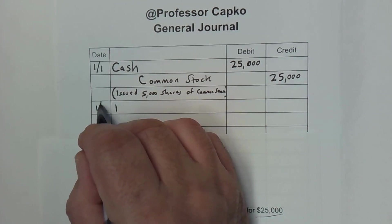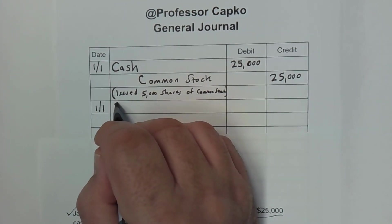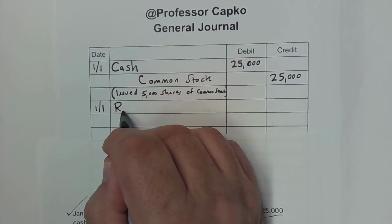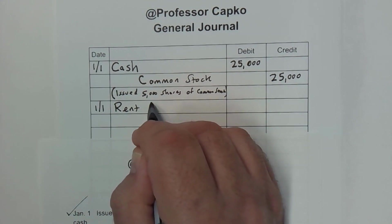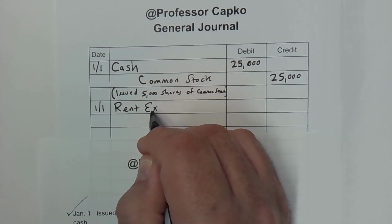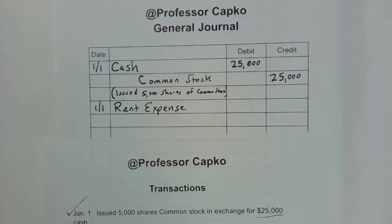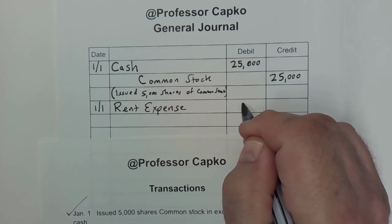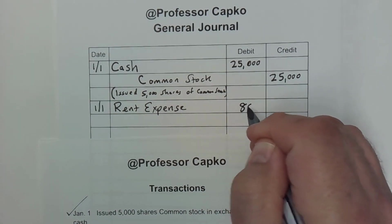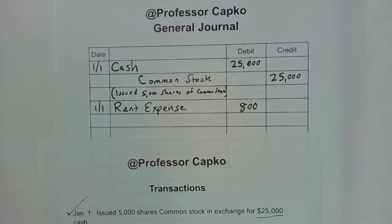So I'm going to put the date here — 1-1 — and the account is called rent expense. And our rent expense was $800. So I'll debit $800.